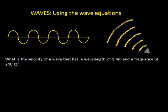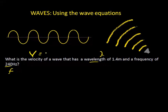In this lesson we're going to do our first calculation using one of the wave equations. We'll analyze this question: what is the velocity of a wave that has a wavelength of 1.4 meters and a frequency of 240 hertz? We're given the wavelength lambda, we're given the frequency f, and we're looking for the velocity v. The wave equation that includes velocity, wavelength, and frequency is: velocity of any given wave is equal to its frequency times its wavelength.